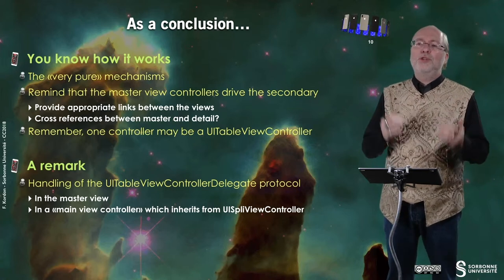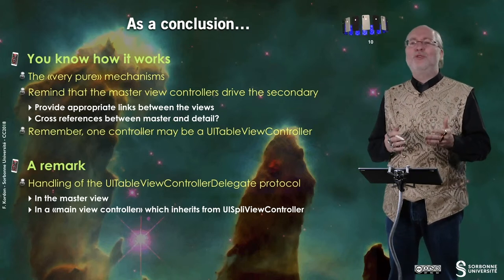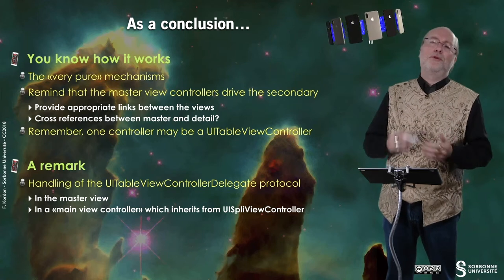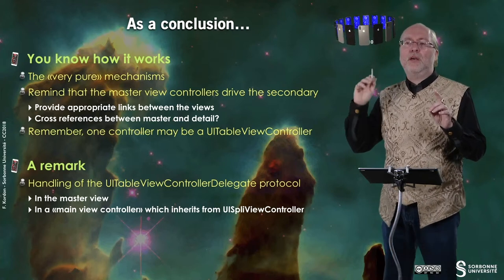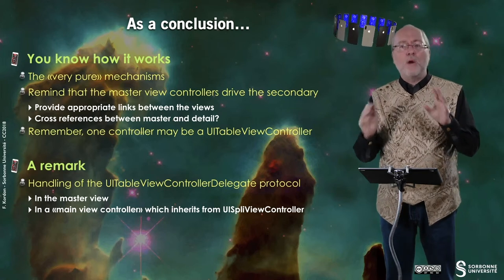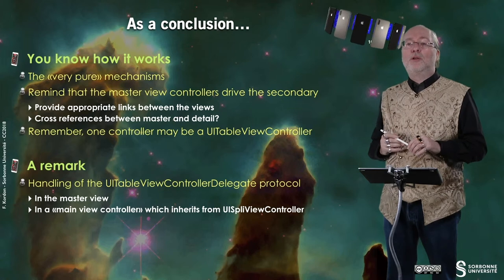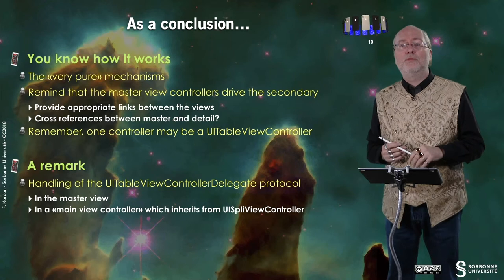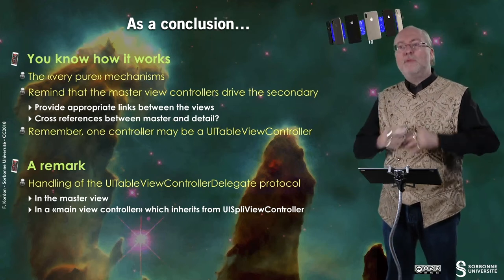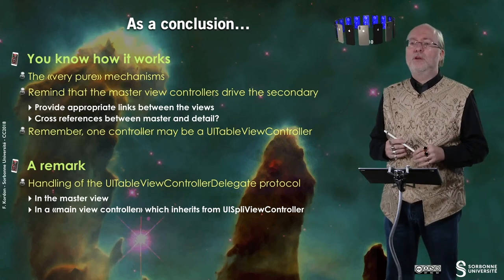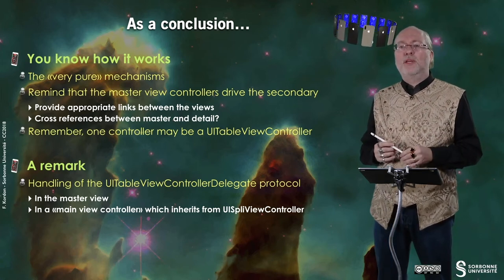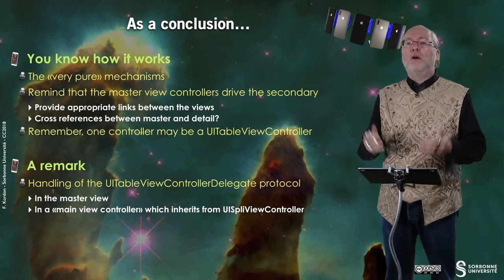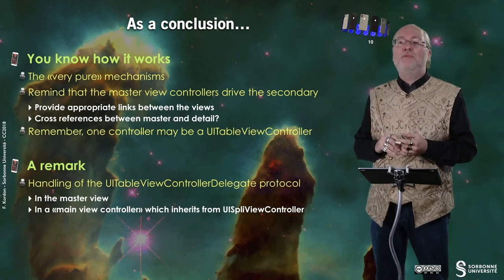So now you have a concrete example of how to use a UISplitViewController in a pure way — just dealing with the UISplitViewController and nothing else. On the master view you can have buttons or whatever you want; you can have a UITableView on either side. Remember that the master view controller usually drives the secondary one, meaning you must provide links between the views or view controllers. Sometimes an action in the secondary view also impacts the primary view, so you need a back-link too — cross-references between master and detail may be possible. In an upcoming exercise you will be in exactly such a situation. Remember one controller or both may be a UITableViewController. Thank you for your attention, see you later.